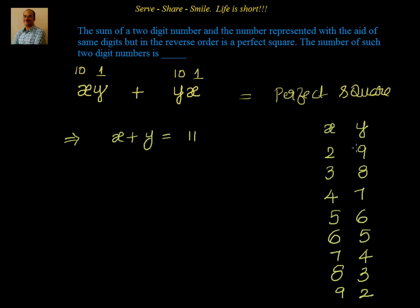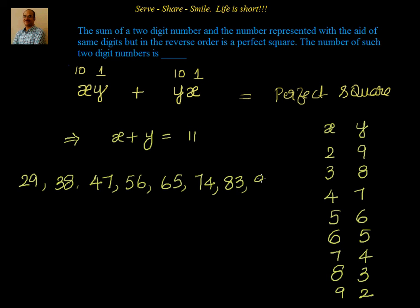If x equals 9, y will be 2. So the numbers are: 29, 38, 47, 56, 65, 74, 83, 92. For example, take 29 — reverse it to get 92, add them up: 29 plus 92 equals 121, which is 11 times 11, a perfect square. Similarly for 38 plus 83, 47 plus 74, and so on. Counting all such numbers: one, two, three, four, five, six, seven, eight. The number of such two-digit numbers is 8.